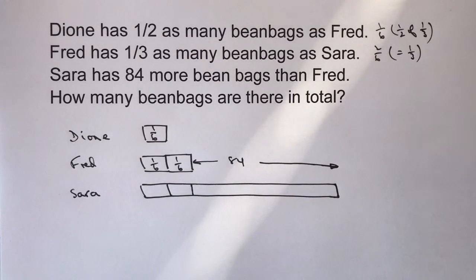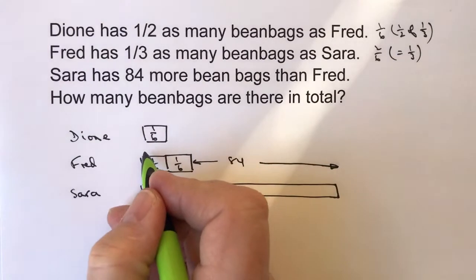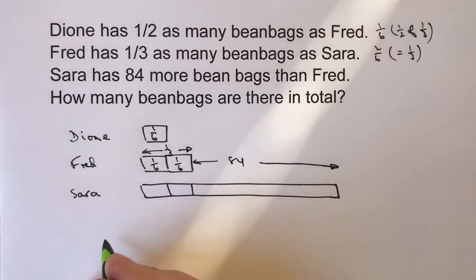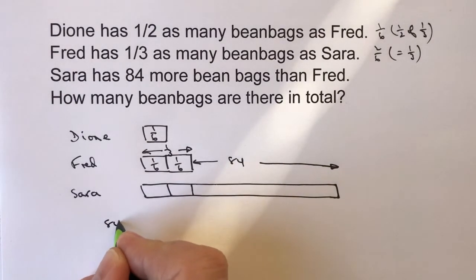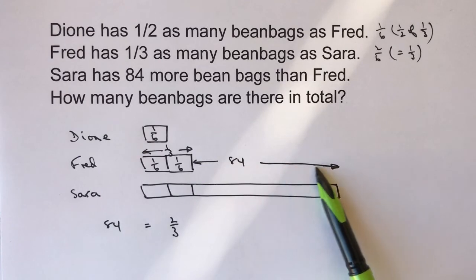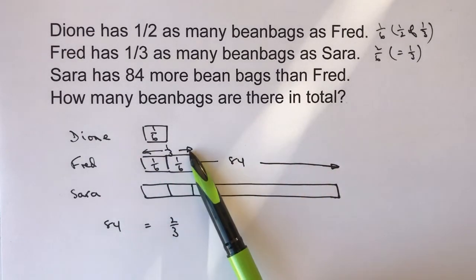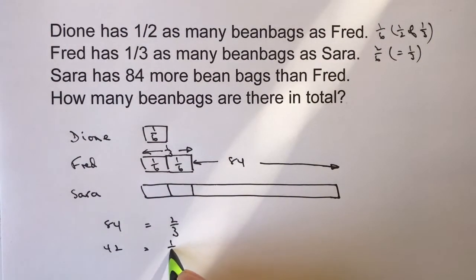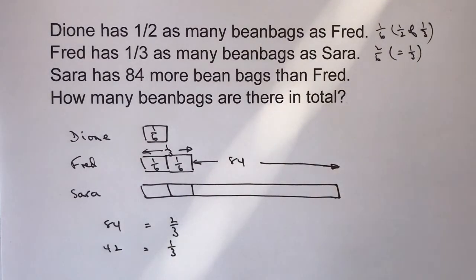Let's figure out how many bean bags there are in total. What we're saying is that Fred's share is one third, which means that this 84 is equivalent to two thirds. So 84 equals two thirds of the total bean bags. This section along here is two thirds, and this section is one third. So if 84 equals two thirds, it follows that 42 equals one third — we just divide by two.